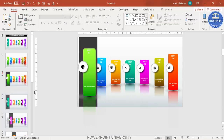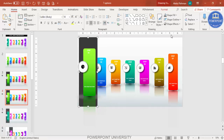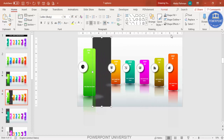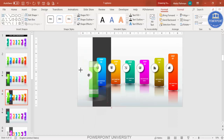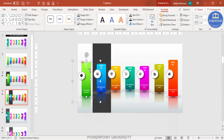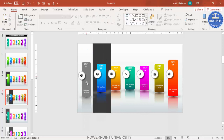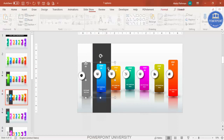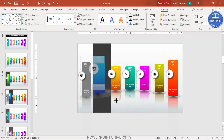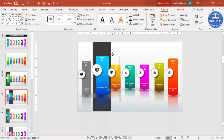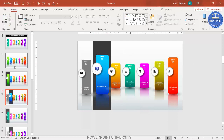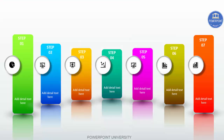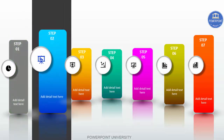To move to the second option, duplicate this slide. On the new slide, move the highlight rectangle to cover the second option, go to Format and Send to Back. Hold Shift and reduce step two back to original size, then bring the highlight to step two's position. Change step one's color to gray to show it is finished. Then increase the size of step two by holding Shift to bring it into focus.